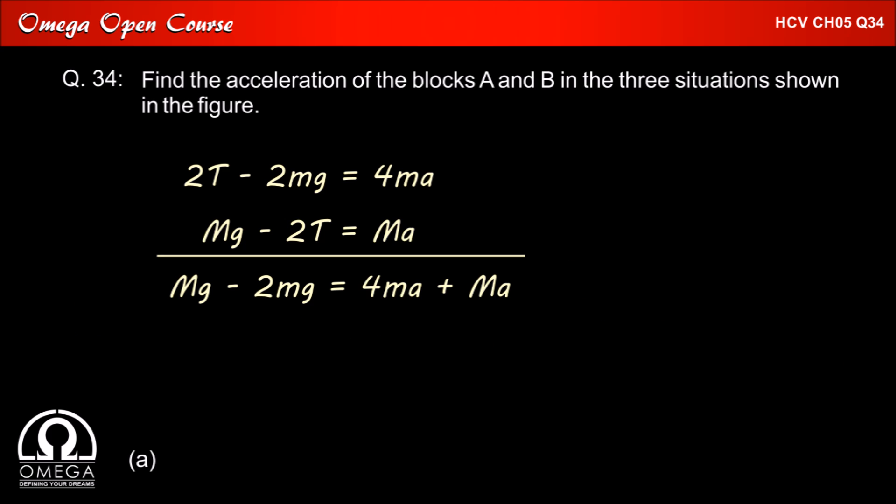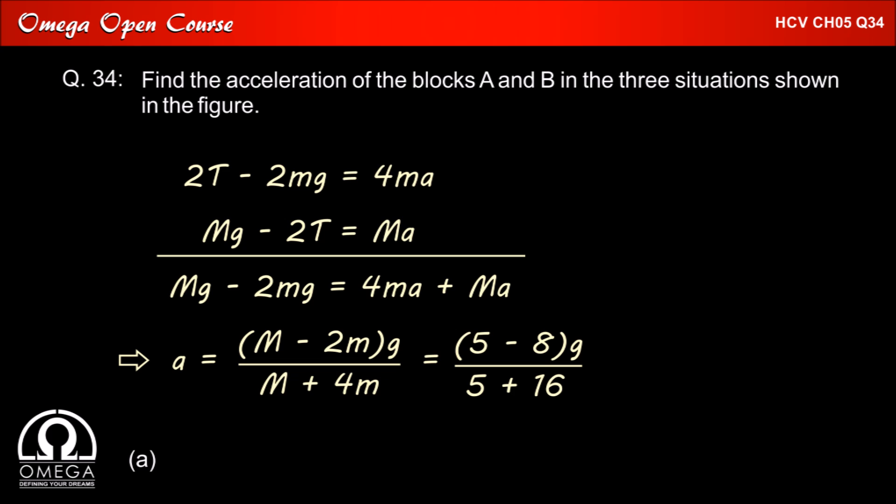Multiplying equation 1 by 2 and adding it to equation 2, we get capital Mg minus 2Mg equal to 4MA plus capital MA, which on simplification gives A equal to (capital M minus 2M) multiplied by G, divided by (capital M plus 4M). It is given that capital M is 5 kg and M is 4 kg. Putting these values, we get (5 minus 8) times G divided by (5 plus 16), that is minus G by 7.